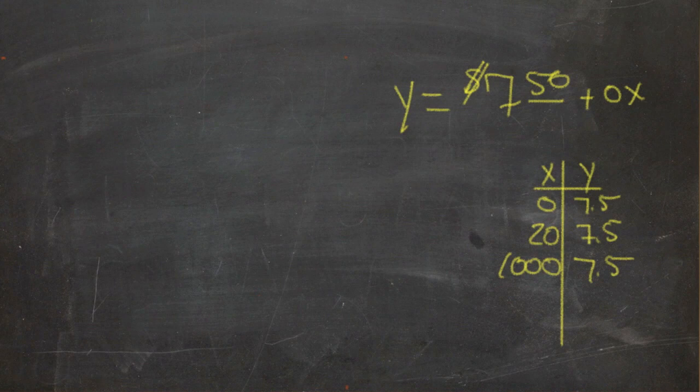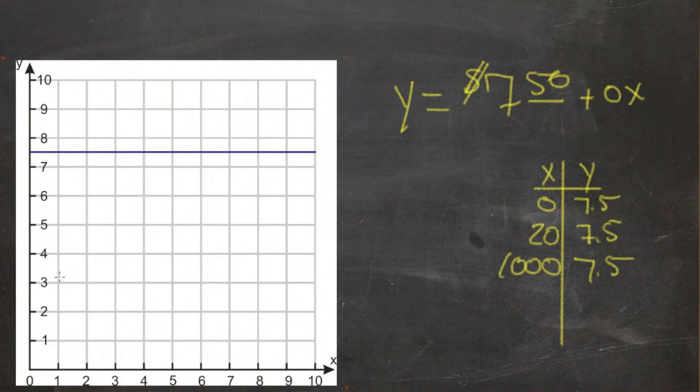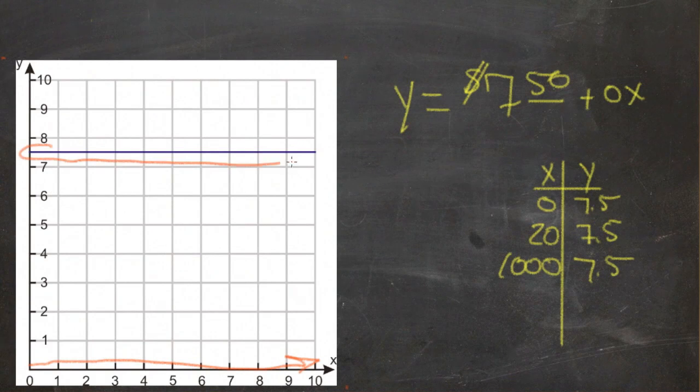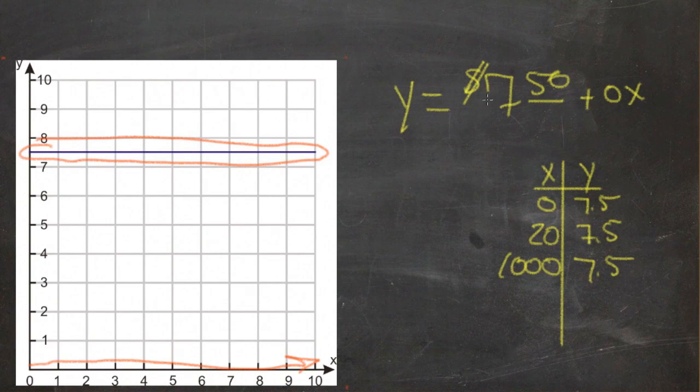And what we get when we graph it is actually a horizontal line here at y equals 7.5. We can see that no matter what x happens to be down here across the bottom, it doesn't matter, y is always 7.5 up here on top. So our equation really effectively is just y equals 750, and x doesn't even need to be written in because it just doesn't make any difference.